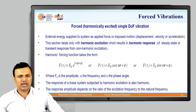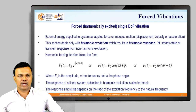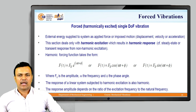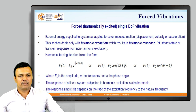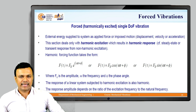The harmonic forcing function can be expressed as f0 times e raised to i-omega-t plus phi, or as f0 cos(omega-t plus phi), or as f0 sin(omega-t plus phi), where f0 is the amplitude of the force, omega is the frequency of the excitation, and phi is the phase angle.